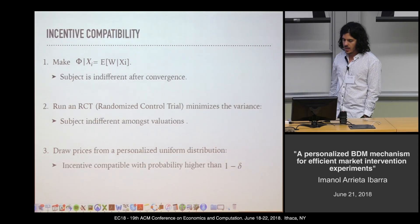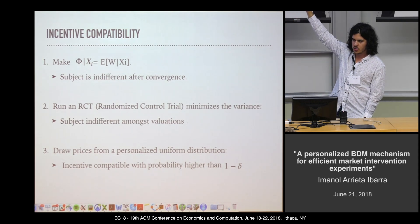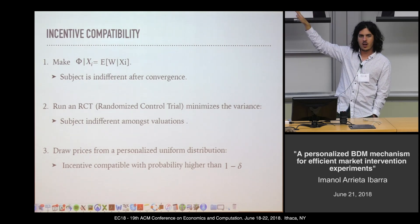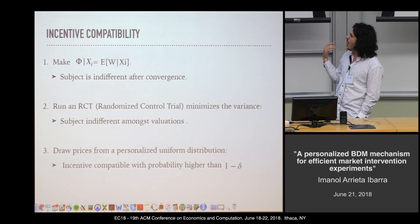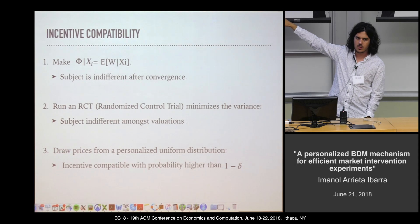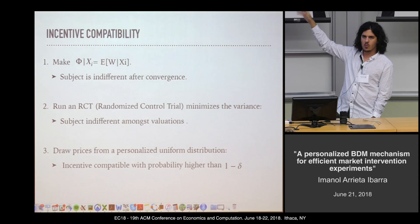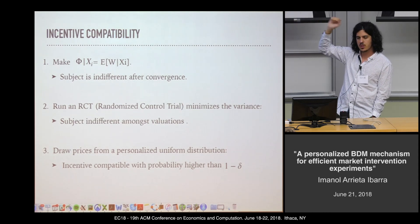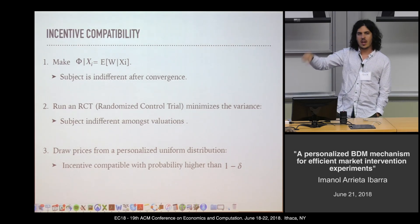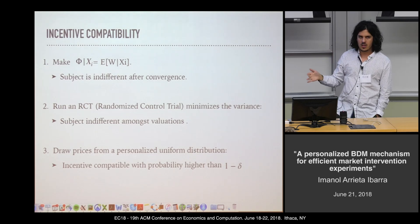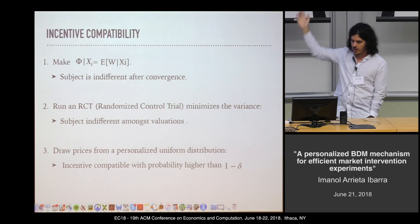Finally, for incentive compatibility: RCTs and the conditional mean prediction approach are not strictly incentive compatible — people are not incentivized to give their actual valuations. For our personalized uniform distribution, we maintain incentive compatibility with probability higher than 1 minus delta. The only case where people would be indifferent between giving their true valuation or not is when they know they are outliers in the distribution the researchers have computed, which is a very rare case and is bounded by 1 minus delta.